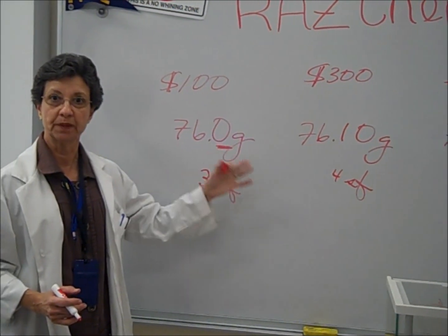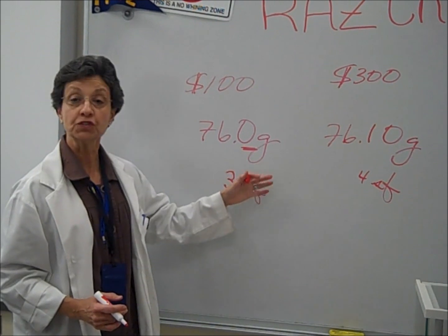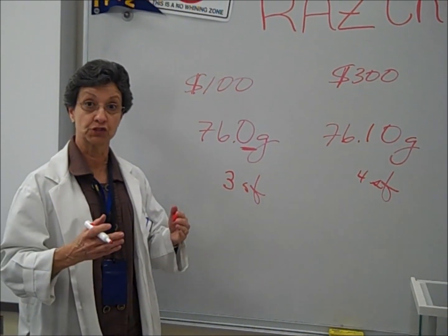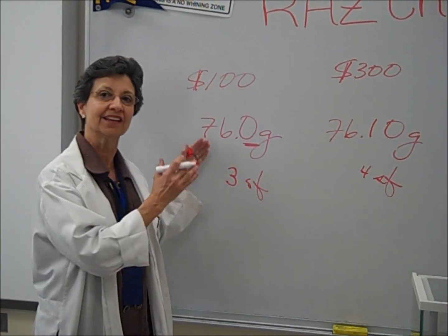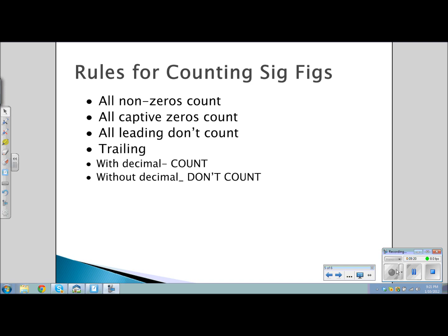When we measure, we want to pay attention to the number of significant figures, and when we do calculations our measurement is only as good as the least accurate measurement. To use significant digits correctly, you must know the rules: all non-zero digits count; all captive zeros count; all leading zeros don't count; trailing zeros count if there is a decimal; and trailing zeros do not count if there is no decimal.